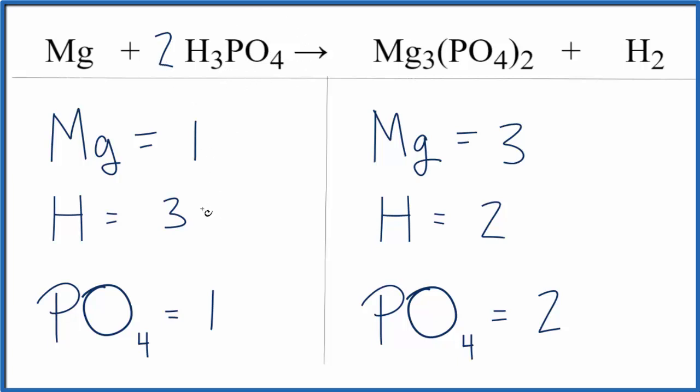We have three times two, that gives us six hydrogens. And then we have the phosphate: one of those times two, and that'll give us two PO4s. So now the PO4s are balanced.